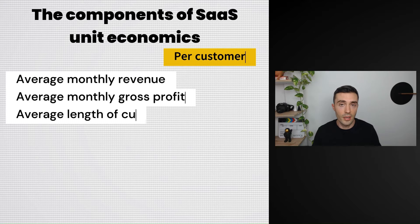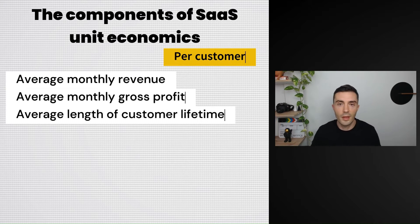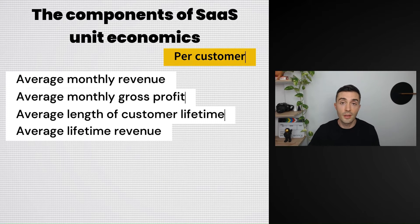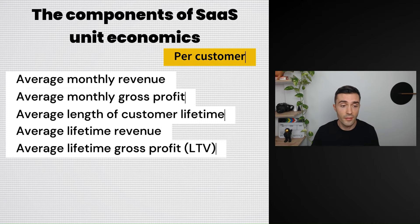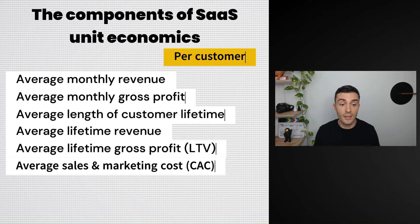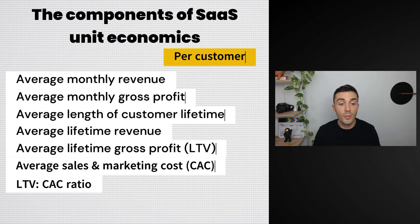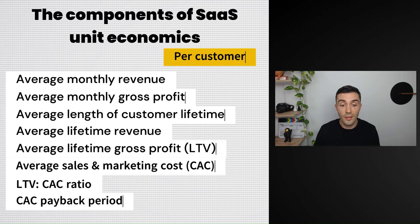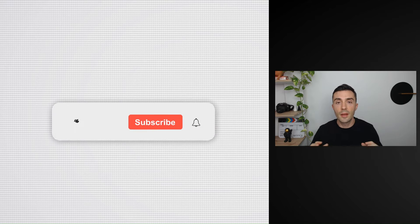Then you have your average length of a customer lifetime, usually measured in months — for example, a 40-month customer lifetime on average for a SaaS product. Then your average lifetime revenue (monthly revenue times the number of months in the customer lifetime), and your average lifetime gross profit (monthly gross profit times the number of months). This represents how much profit you make off your lifetime relationship with each customer — also known as customer lifetime value or LTV. Next is your average sales and marketing cost to acquire one new customer, known as customer acquisition cost or CAC. Then your LTV to CAC ratio — how many multiples of your CAC you make back in profit per customer — and finally, your CAC payback period: how long it takes to break even on your relationship with one customer.